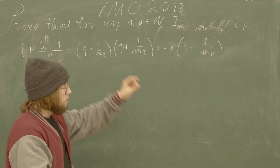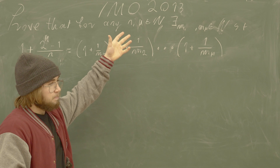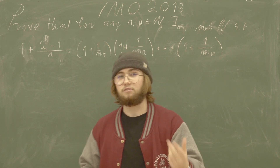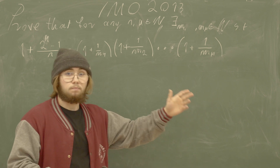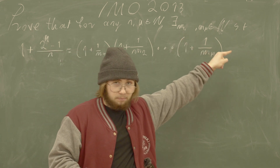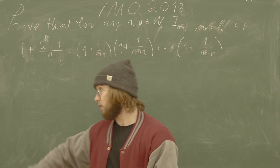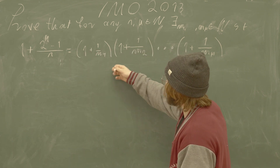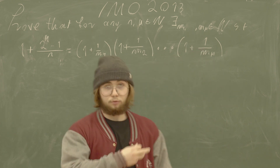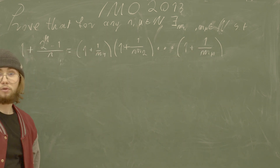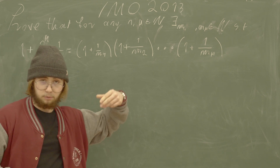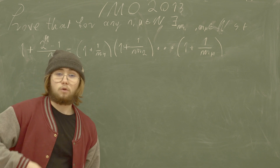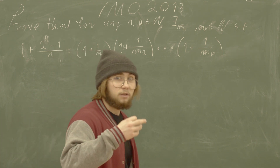Let's go on and solve this problem. We're supposed to prove that for any pair of natural numbers n and k, we can find k more natural numbers m₁ up to mₖ such that the expression one plus two to the power of k minus one, all over n, is equal to the product of one plus the reciprocal of m₁, multiplied by one plus the reciprocal of m₂, up to one plus the reciprocal of mₖ.